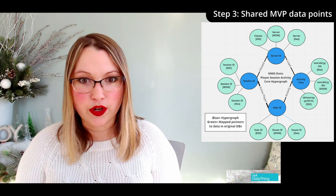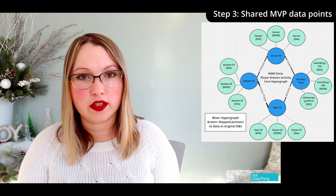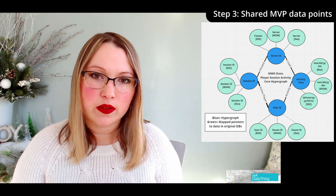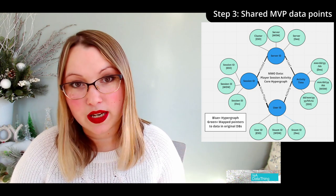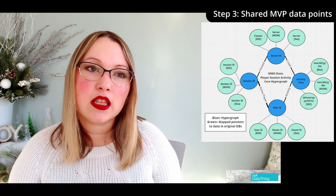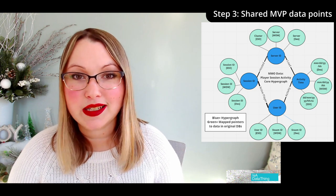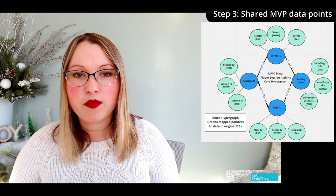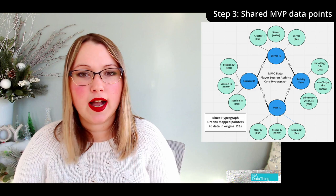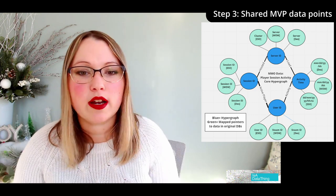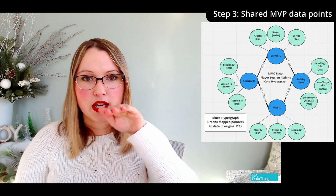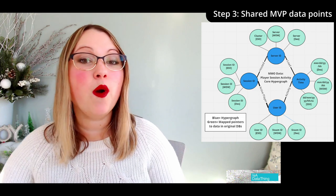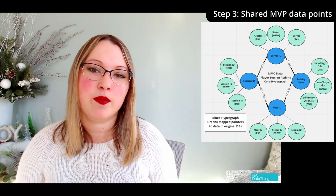Once you have some of this mapping, you create a hypernode. A hypernode is like clustering all of these together and giving them a single label. You can use the most common label across the board, or you can make a new label that maps to your main business use case. For instance, looking at 'cluster' versus 'server', we'll call this hypernode 'server ID' because that's actually what it is. Then you map those fields and their tables to that hypernode — not physically moving data, but pointing to those areas in the separate databases. This creates an entry point into all of those different data sources.